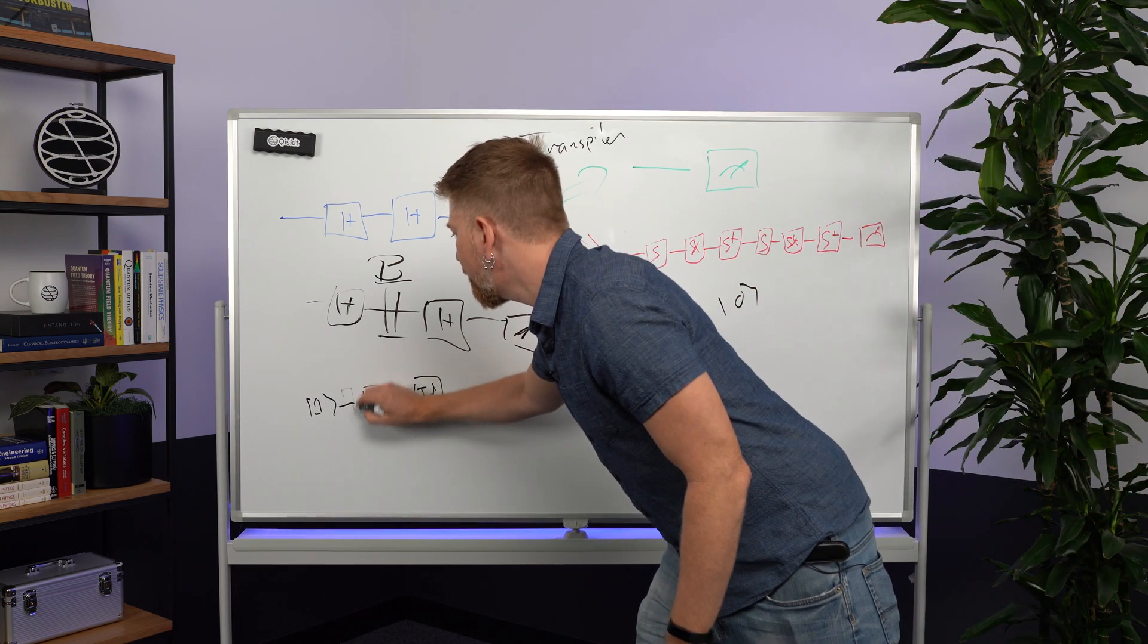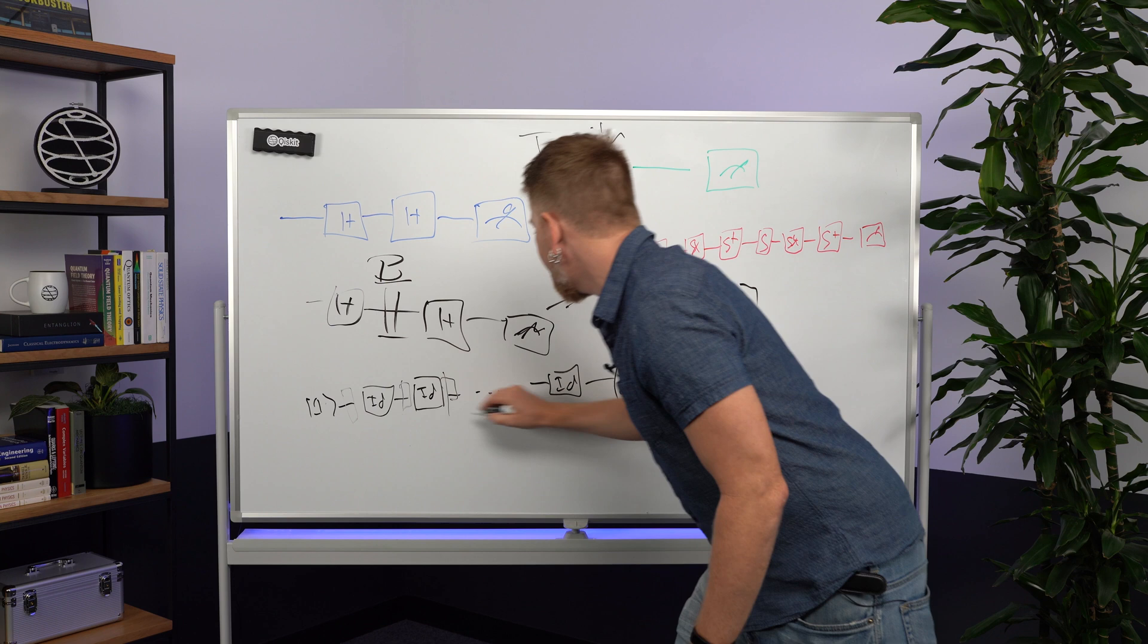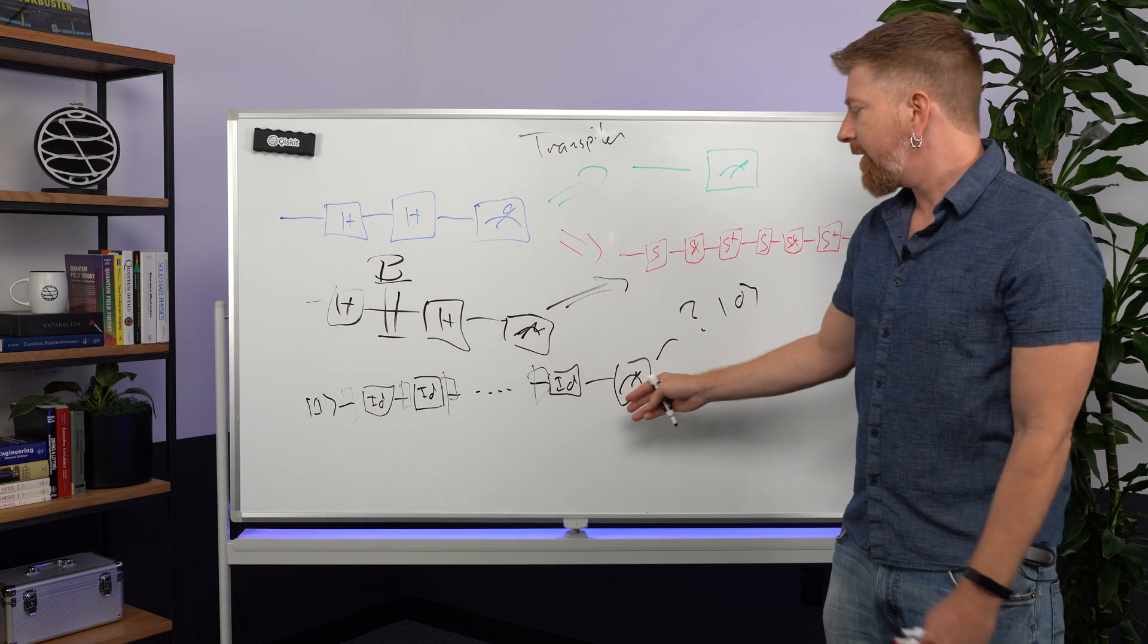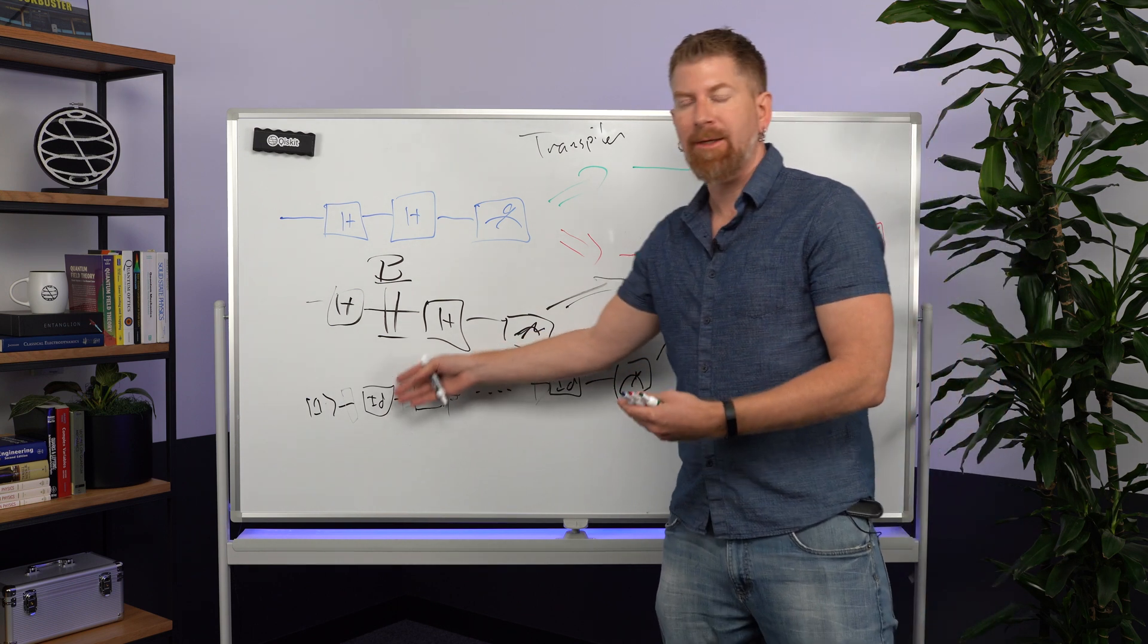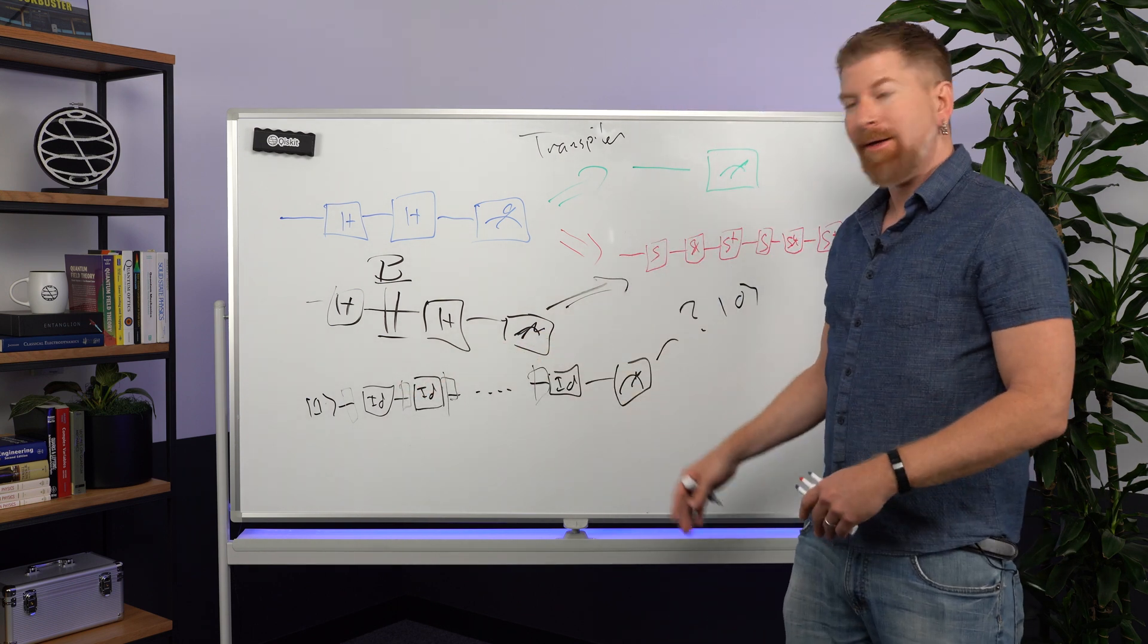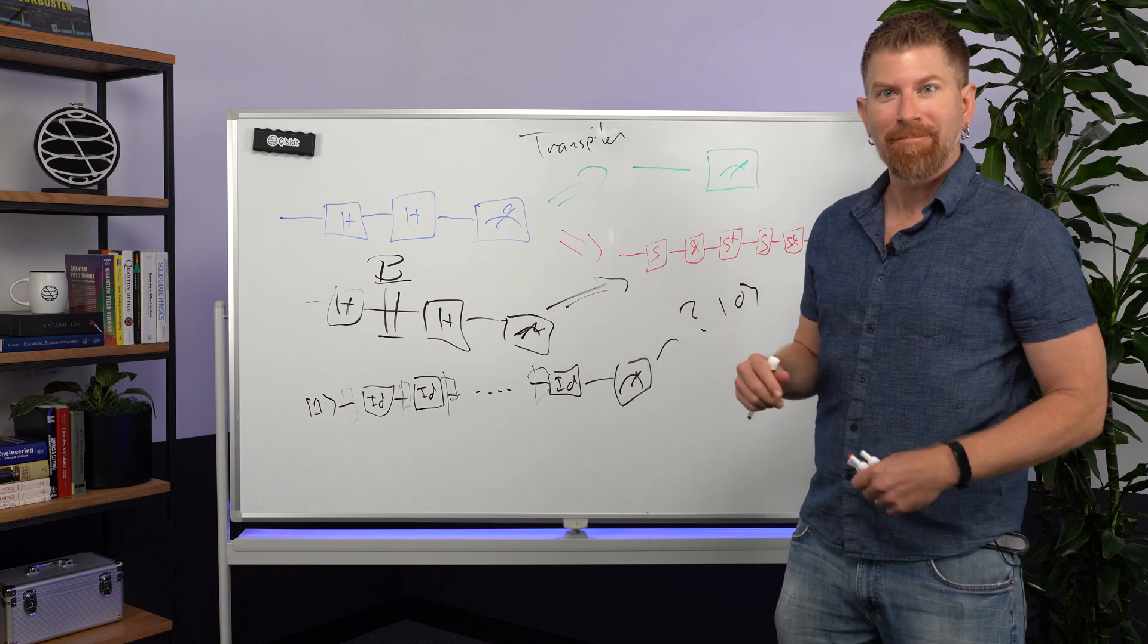But instead, what we do when we do this experiment is we would add a bunch of barriers between each one of these so that the transpiler still respects the fact that you're doing an identity transform that takes the same amount of time as a single qubit gate. And that's what a barrier is.